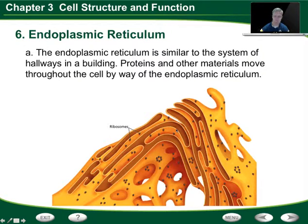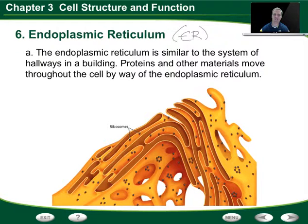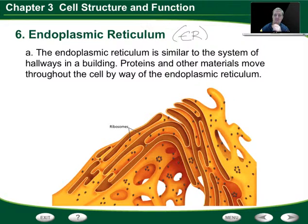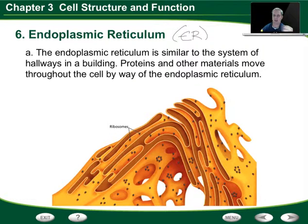Then we have the endoplasmic reticulum — I'll often call this the ER, not emergency room. The endoplasmic reticulum is similar to a system of hallways in a building. Imagine multiple hallways working as delivery systems, like the hallways in our school. What the ER does is allow proteins and other materials to move throughout the cell using this freeway, this hallway system. It makes travel very convenient and effective inside the cell.